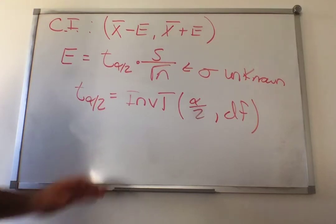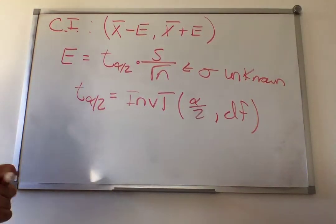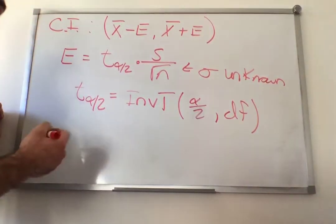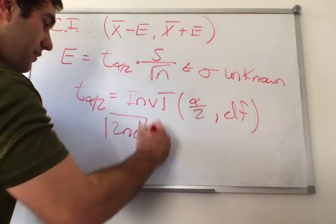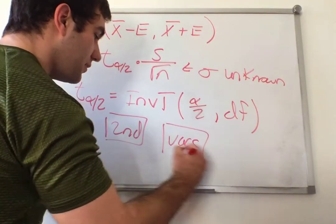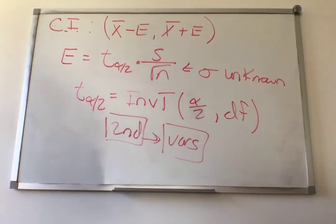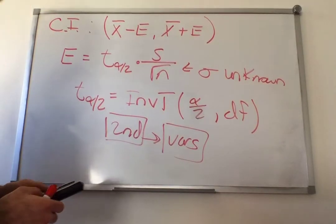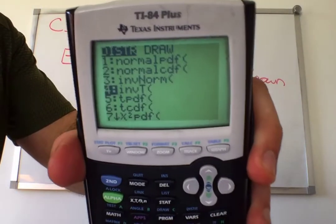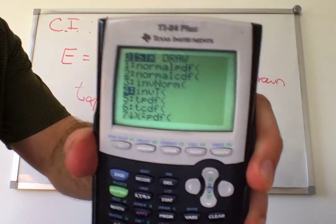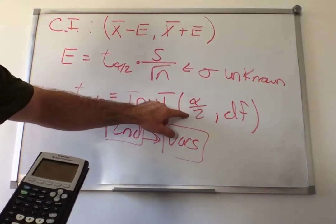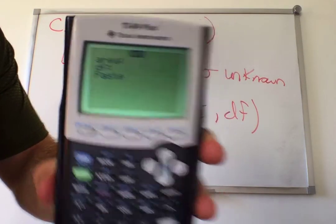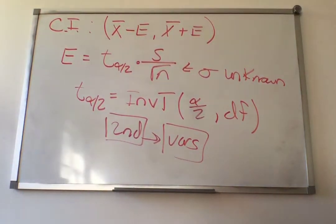If you do not have the inverse t function, it's located where all your other distributions are — hit the second button and then the vars button. Inverse t is option number 4. If you hit enter on it, it asks you the area — that's your alpha over 2 — and it asks you the degrees of freedom. You just paste that into the calculator and you're done.